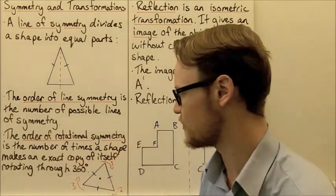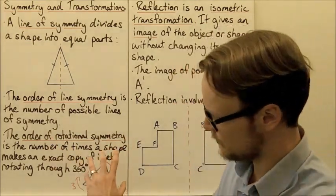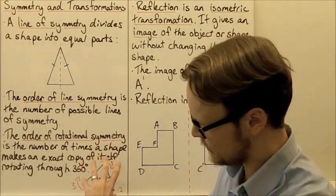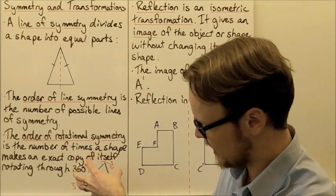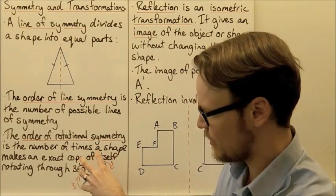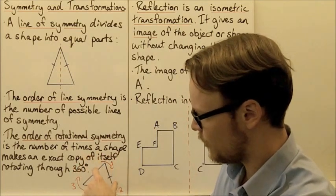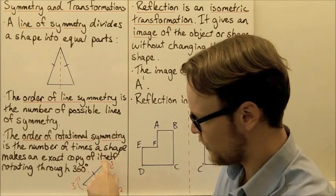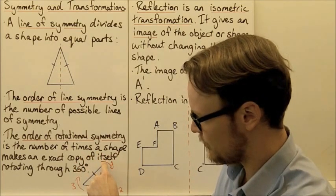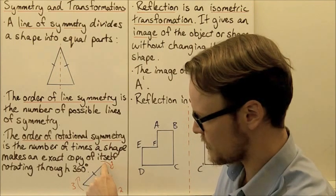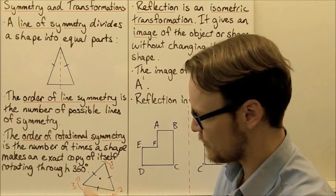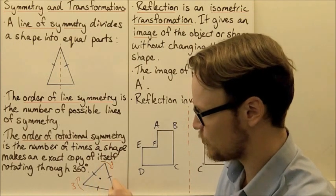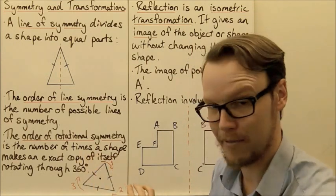The order of rotational symmetry: if I was to take the triangle and rotate it around, I'd be able to find a point where the point that's pointing up would be over here, and they would all have rotated one third of the way around.